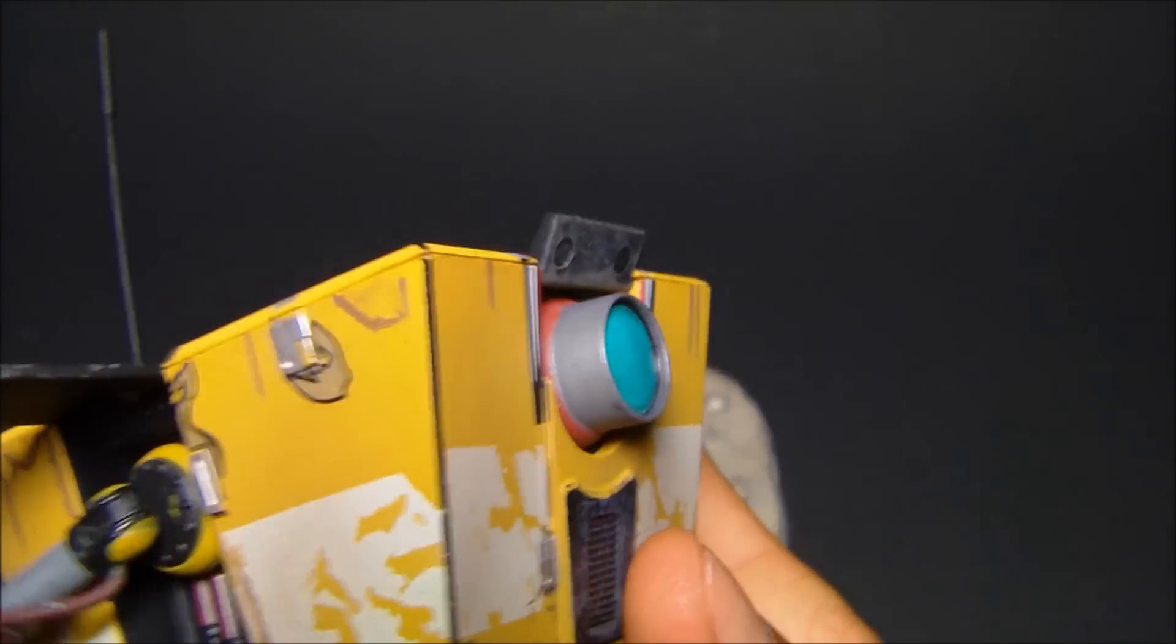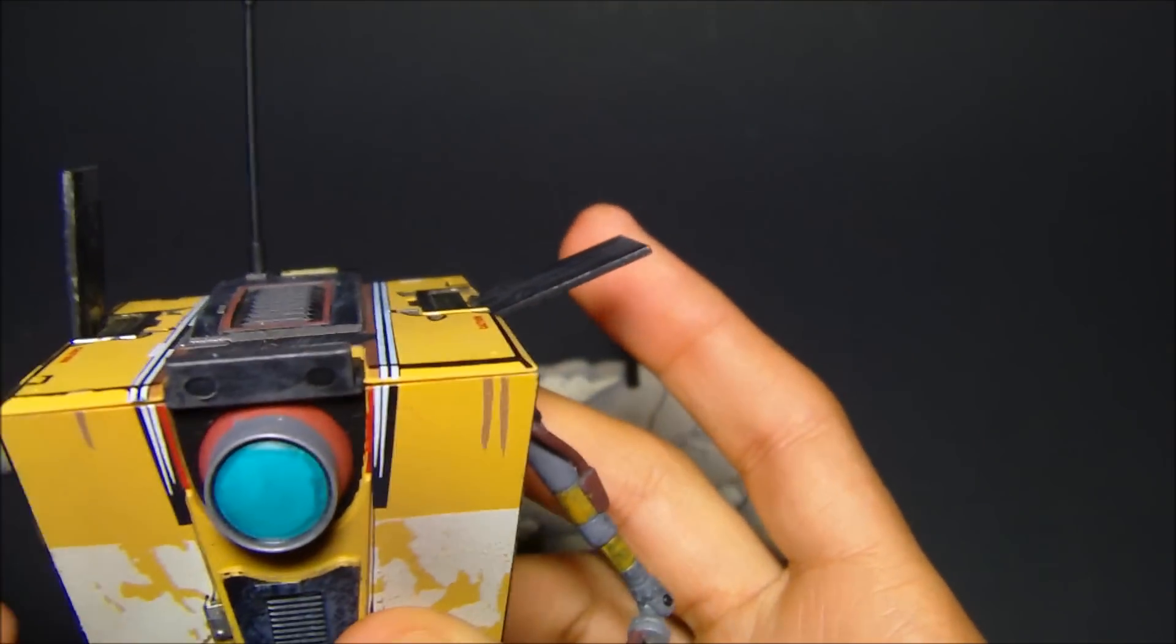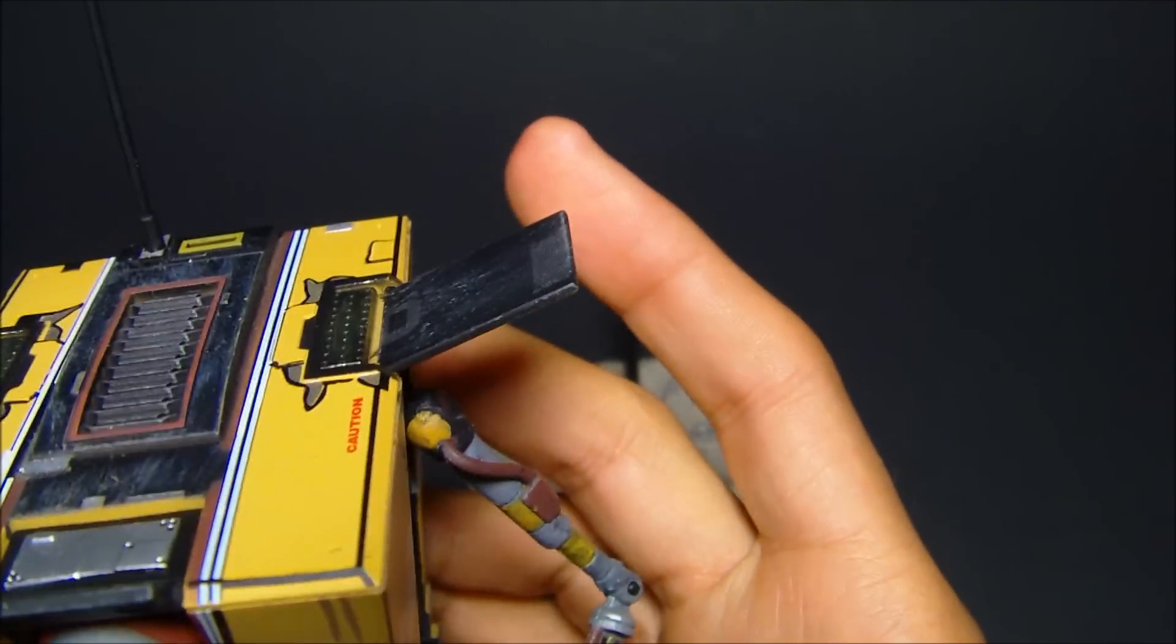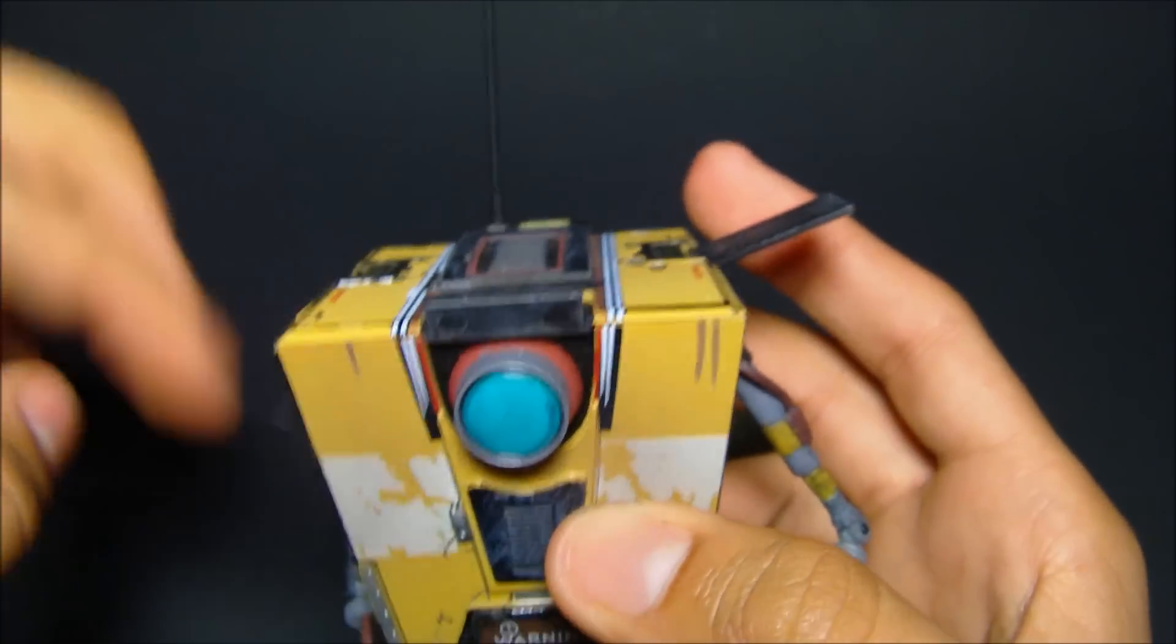He does have some movement. Obviously, he can go 360. He can go out. You've got to be very careful with it. It is a very tight joint in there. He has joint movement in his arms. His hands don't move, but that's not a problem.